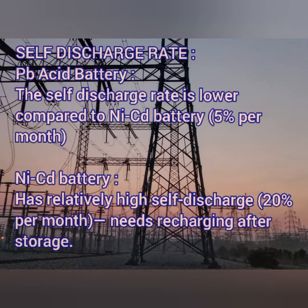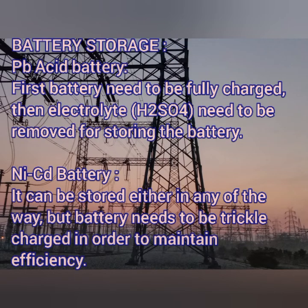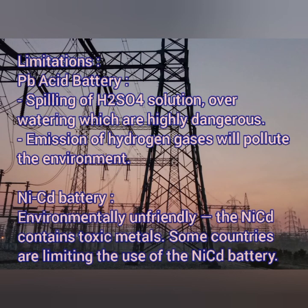On the other hand, nickel cadmium batteries have a very high self-discharge rate of about 20 percent per month. They should be kept in trickle charging mode — a very slow charging mode — in order to maintain battery efficiency at a good level.